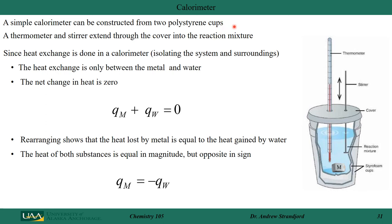Here is an example of a very simple calorimeter that works pretty well in the lab — it's literally two styrofoam cups with a cover. The surroundings are the water and the system is the metal. A thermometer measures the heat being transferred, and a stirrer mixes the water. Since heat is exchanged inside the calorimeter and we assume no heat is transferred outside the styrofoam cups, heat is only exchanged between the metal and water, so the net change in heat is zero: q_metal + q_water = 0.